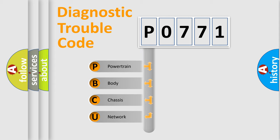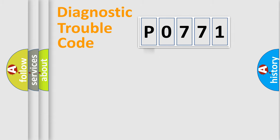We divide the electric system of automobile into the four basic units: powertrain, body, chassis, network. This distribution is defined in the first character code.